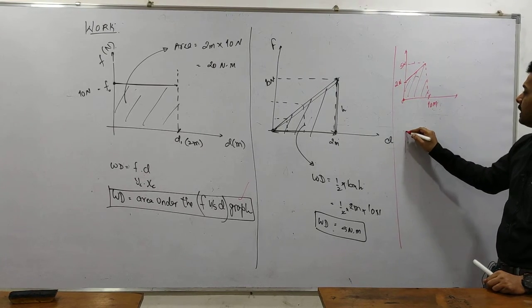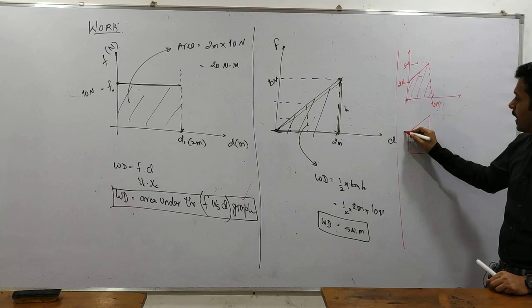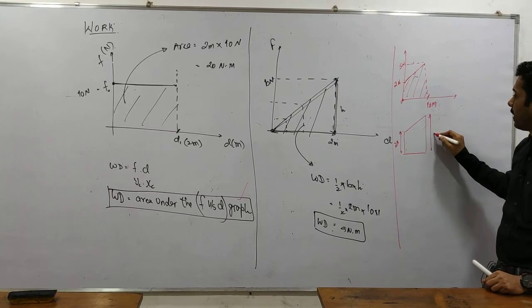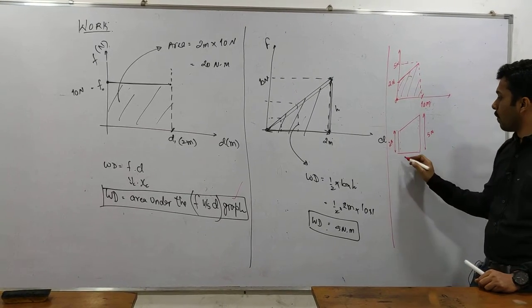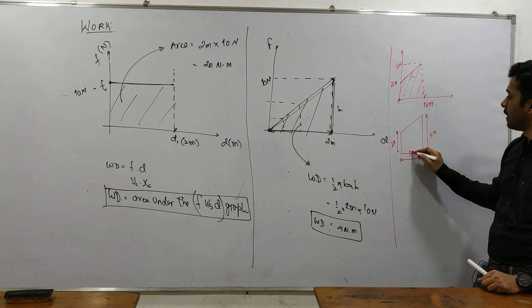You see friends, this is nothing but a trapezium. What is the height of the trapezium? 2 Newton here and 5 Newton here. What is the perpendicular distance between the two parallel lines? 10 meter.